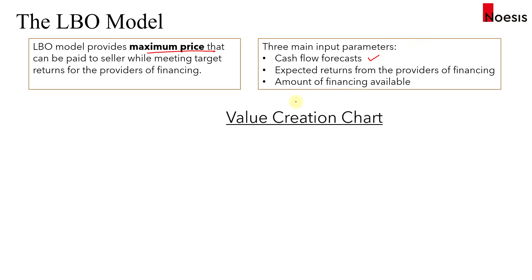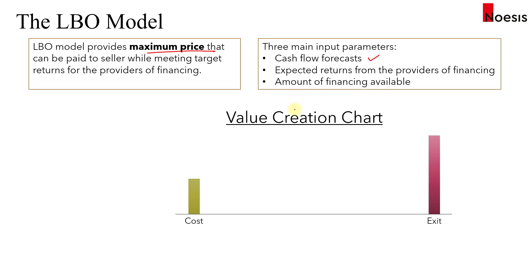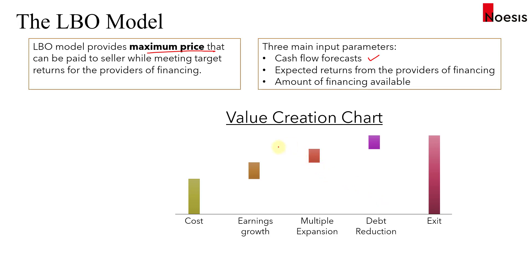The value creation chart will summarize the sources of additional value between the exit value and the original cost. Value creation comes from a few factors: earnings growth that arises from operational improvements and enhanced corporate governance, multiple expansion that depends on pre-identified potential exits, and also from optimal financial leverage and the repayment of part of the debt with operational cash flows before exit. Each component should be carefully considered and backed by supporting analysis, frequently from a very lengthy due diligence process.